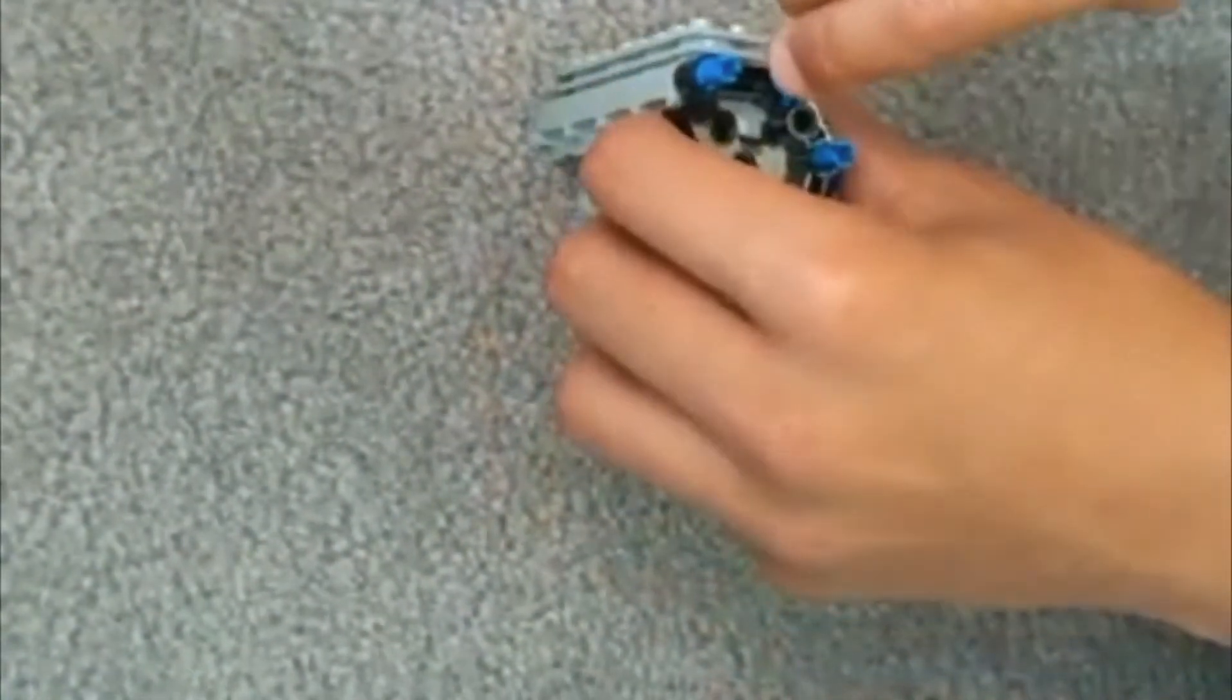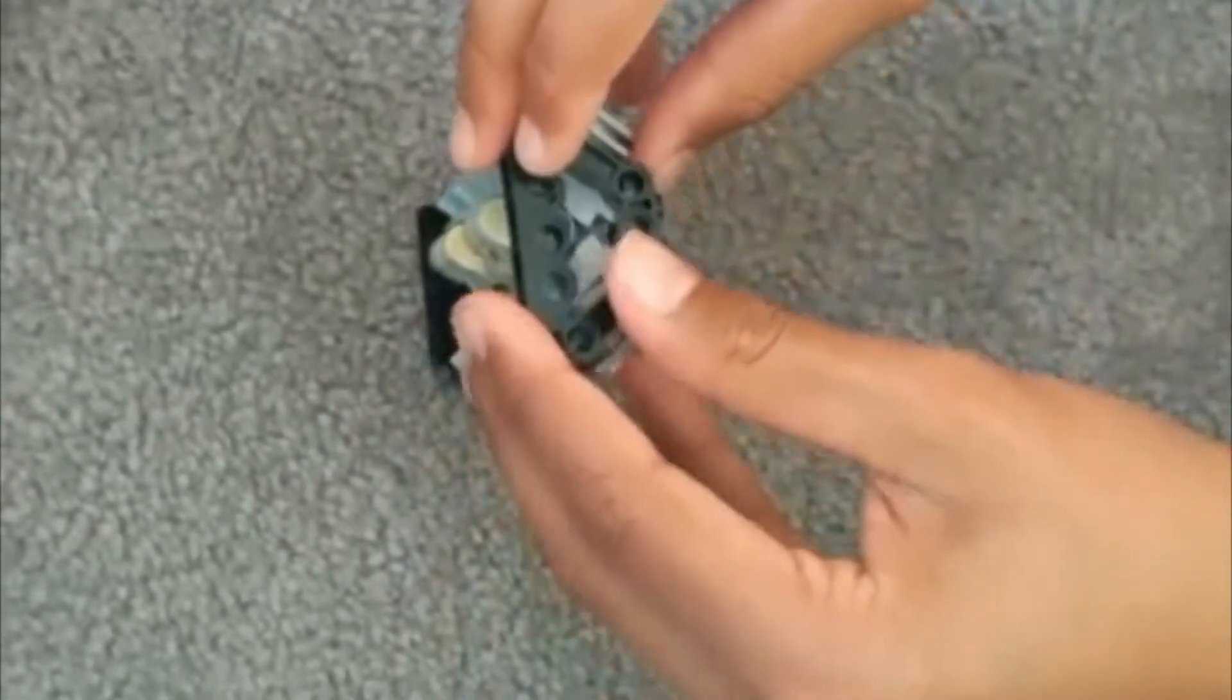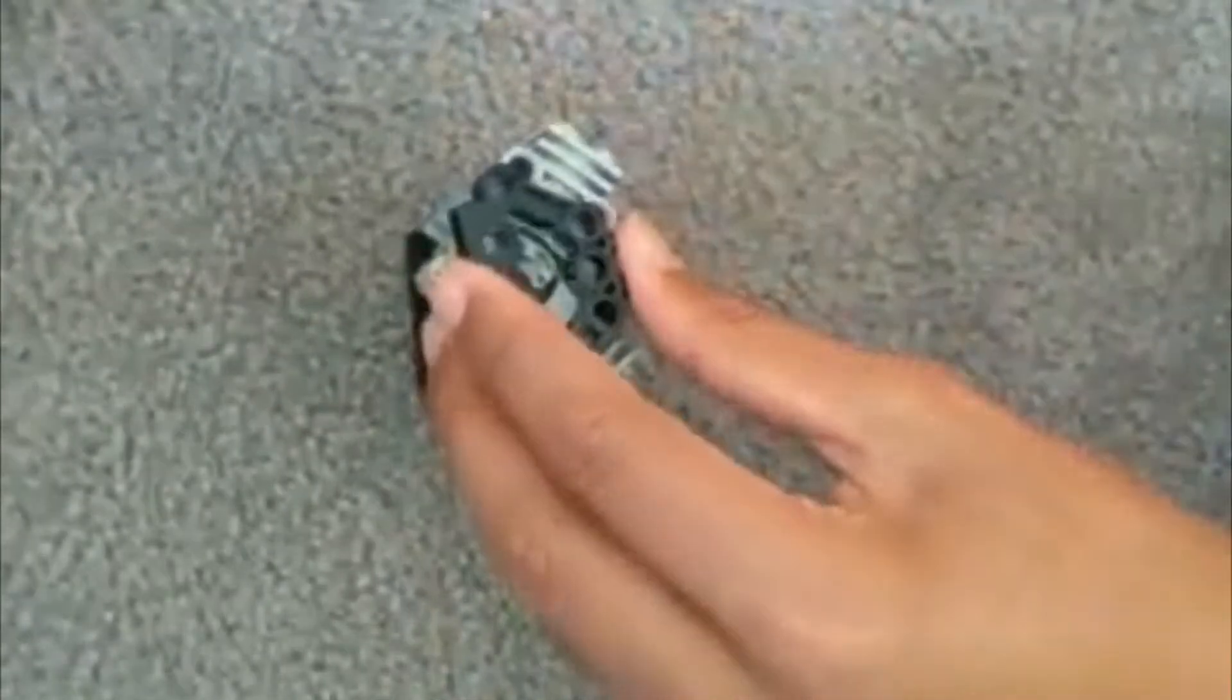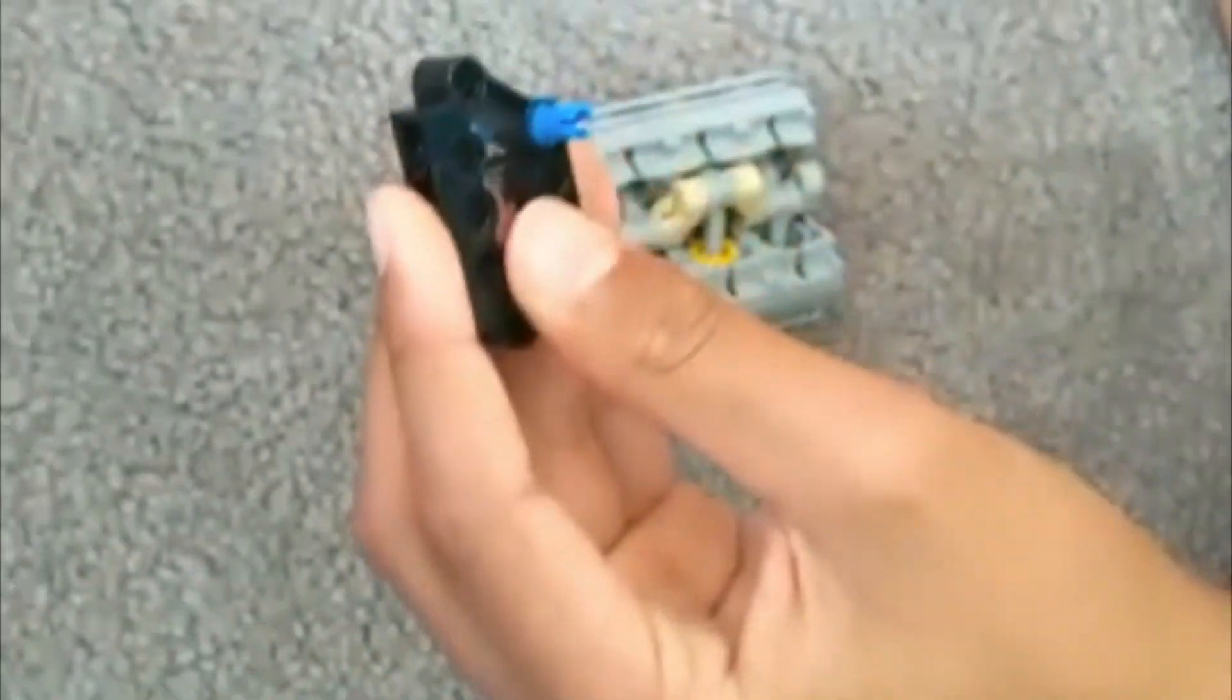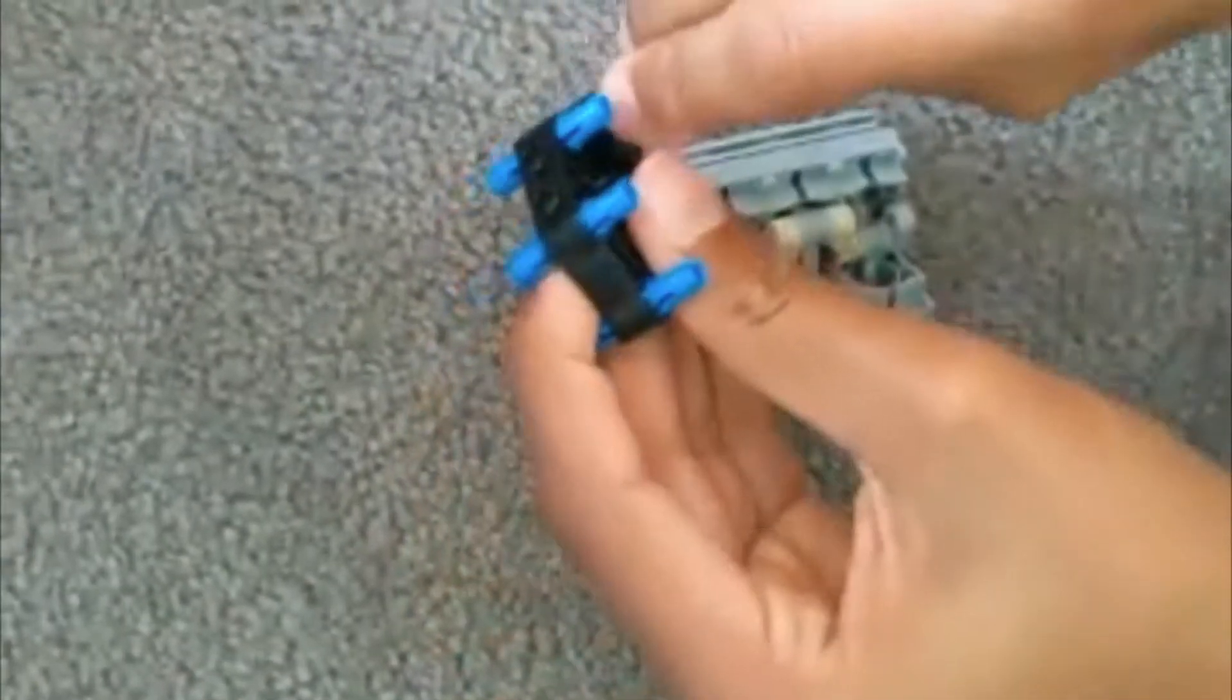You put the blue connectors in into these two holes. Now this is secure. We will do the same thing to the other side. You get one, put it through the hole. Another, another, another, another, and the last.